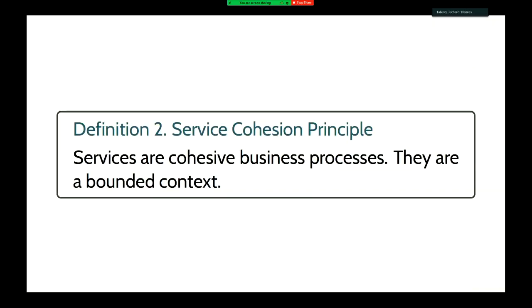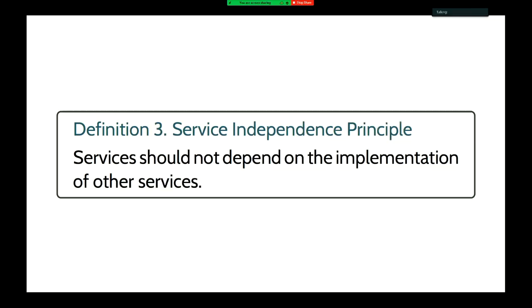Two principles we want to deal with in microservices: first, every service is a cohesive entity — it's delivering a business process, and every service relates to a particular bounded context. The second key principle is independence: services are independent of each other, or there is minimal coupling between services. One service should not need to know about the implementation of another service.